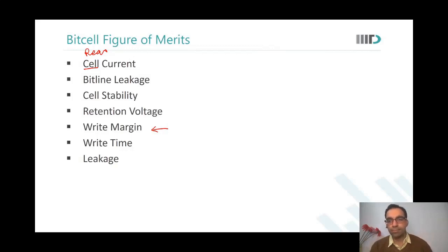Student asks: In the write cycle, first we are reading what is there - 1-0 or 0-1 - then we are deciding what BL and BLbar should be for writing purpose? Instructor responds: No, we get the information from the user - what is the data that I need to write into the memory cell. Based on user input, I decide whether I want to discharge bitline or bitline bar. If the same data is already there and the user has also given the same data, then there will be no change in the memory content. When I'm asked to write, I simply write.